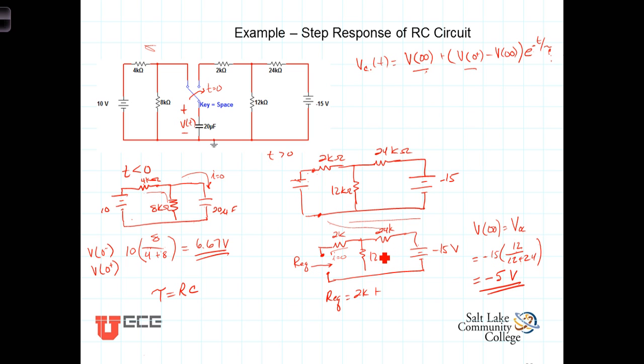And the parallel combination of those two is in series with the 2k to give us Req or 2k plus 12 times 24 over 12 plus 24. And our answer will be in kilo ohms. So 12 in parallel with 24 turns out to be 8k added to the 2k then gives us Req is equal to 10 kilo ohms. Now we can calculate tau,